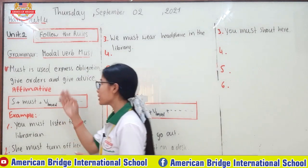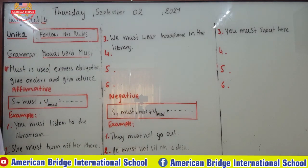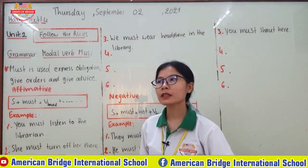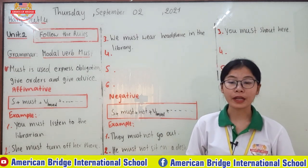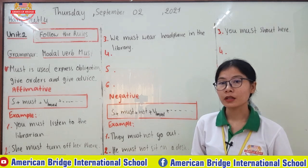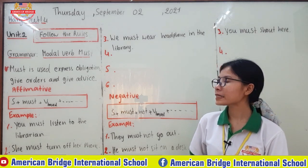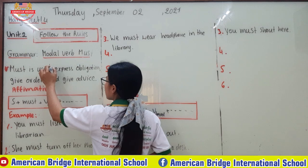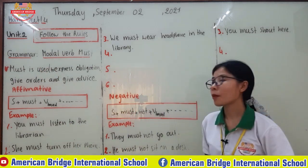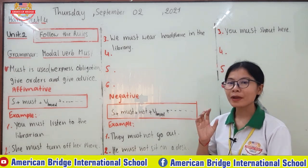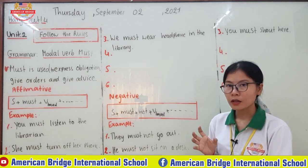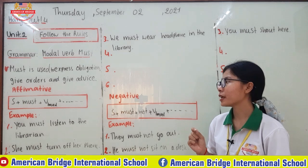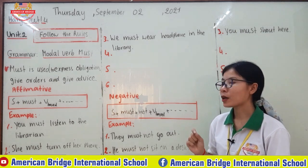Today we focus on the grammar point about the modal verb 'must.' You might have learned some modal verbs already. 'Must' is used to express obligation — referring to your duty, what you have to do or not do — as well as to give orders and give advice.